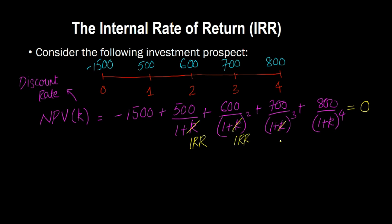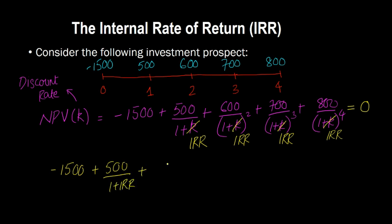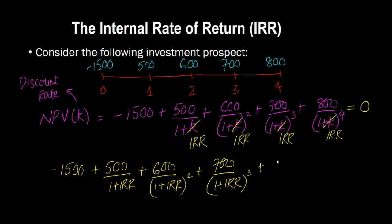By definition, IRR is that discount rate that makes the NPV equal to zero. So instead of K, we substitute IRR: negative 1500, plus 500 divided by (1 + IRR), plus 600 divided by (1 + IRR) squared, plus 700 divided by (1 + IRR) cubed, plus 800 divided by (1 + IRR) to the power of 4 equals zero. Here you have one equation and one unknown — IRR — and solving for it gives you the actual internal rate of return.